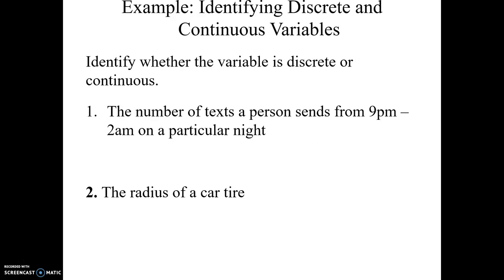Here's some more examples. The number of texts a person sends from 9pm to 2pm on a particular night. So can you send 100 texts? Yeah. Can you send 100.1 texts? No. Because decimals are not possible, this is going to be discrete. There are gaps between possible values. So 100, 101, there's a gap. Nothing in between is a possible value.